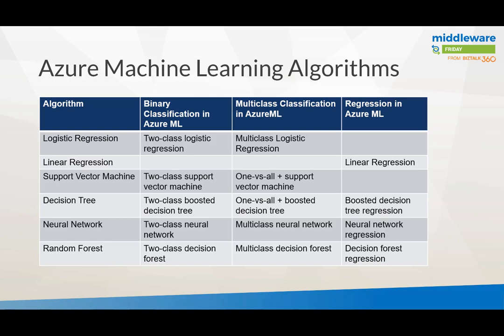The heart of machine learning, of course, are the algorithms. Whether you want to do regression, predictability, or anomaly detection, these capabilities are all available in Azure Machine Learning. You can pick algorithms out of the box depending on what you want to do — whether it's classification or prediction.